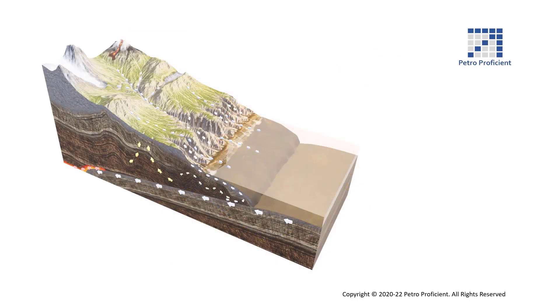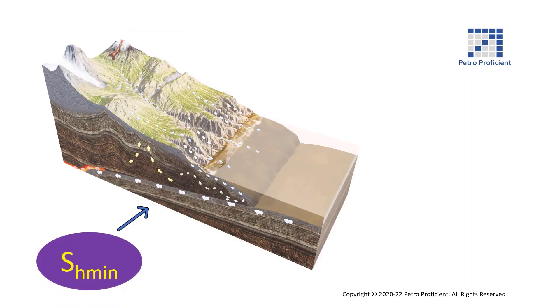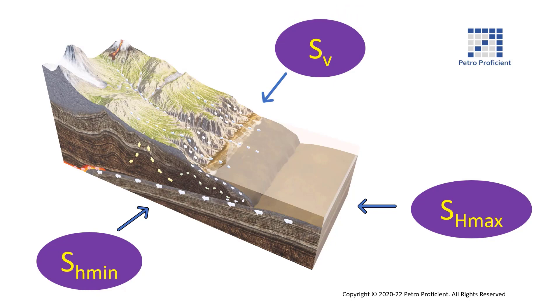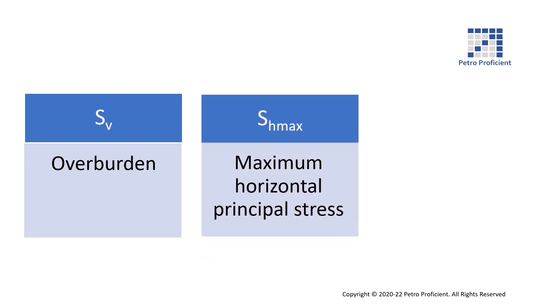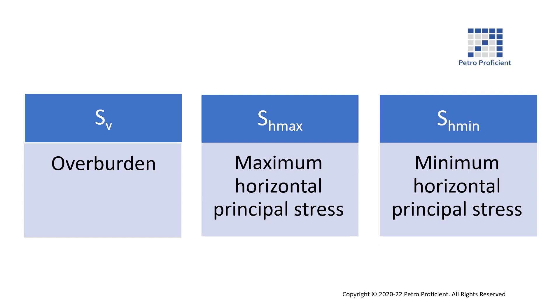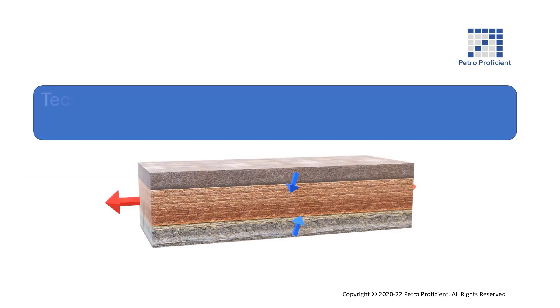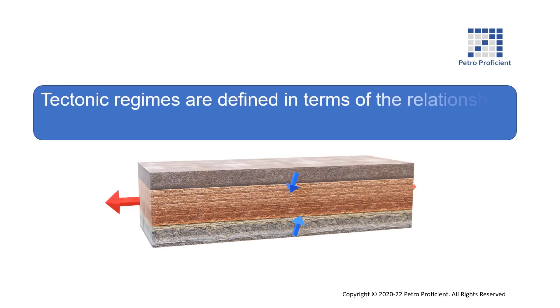As a reminder of our discussion from the earlier video on geomechanics, rocks underground are subjected to multiple stresses. They usually differ in direction and magnitude as they originate from different sources. For instance, vertical stress SV at a particular depth is essentially due to the weight of the overlying rock. Tectonic regimes are defined in terms of the relationship between vertical, minimum, and maximum stress.